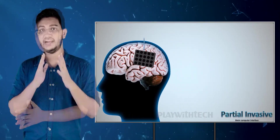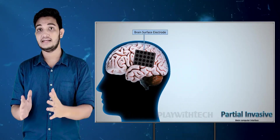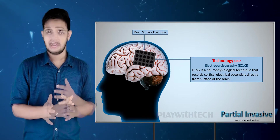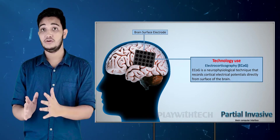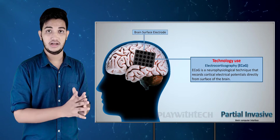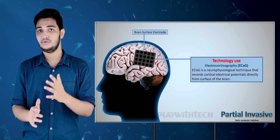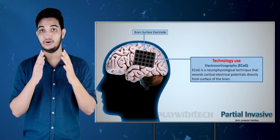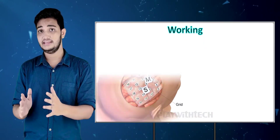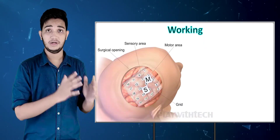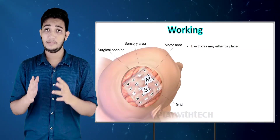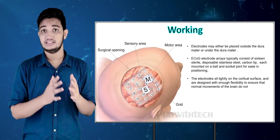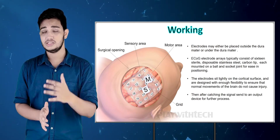This array uses ECoG technology — electrocorticographic technology — which is a neuropsychological method to capture signals from the brain. It is called electrocorticography because it captures from the cortex. The array consists of non-bacterial and disposable material, because anything added inside the brain must avoid causing infection — which is why it is disposable.